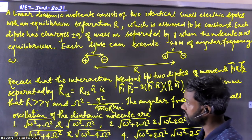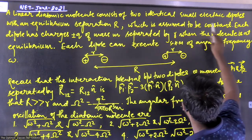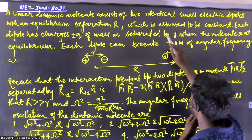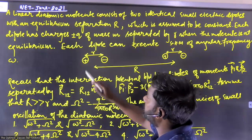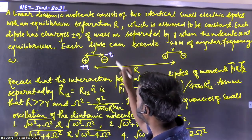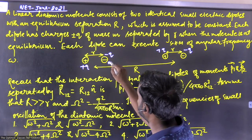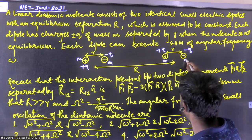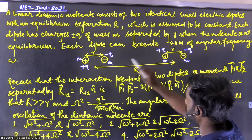The question states: a linear diatomic molecule consists of two identical small electric dipoles with an equilibrium separation R. This separation R is assumed to be constant. Each dipole has charges +q and -q. The mass of each molecule component is m, and the dipoles are separated by distance r, so separation here is r and here also separation is r.